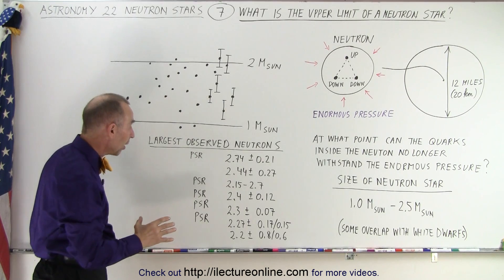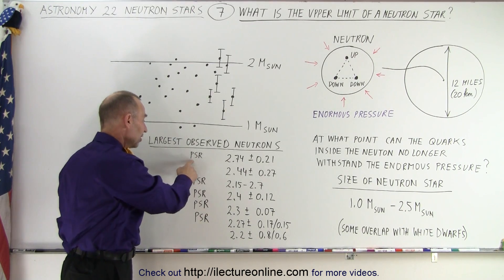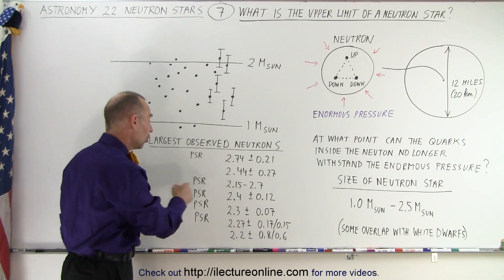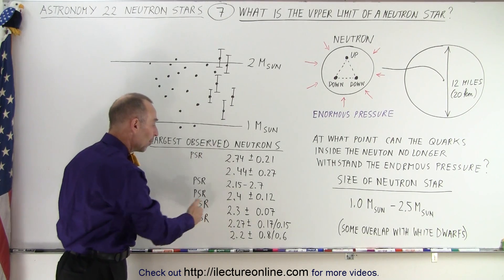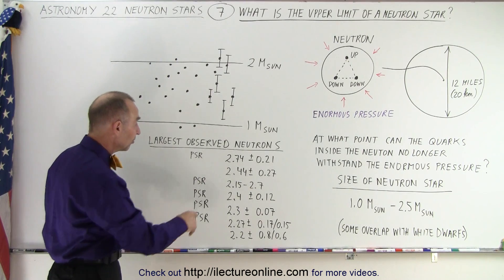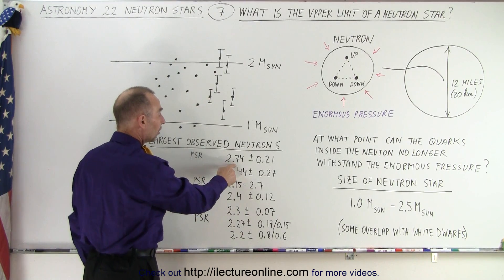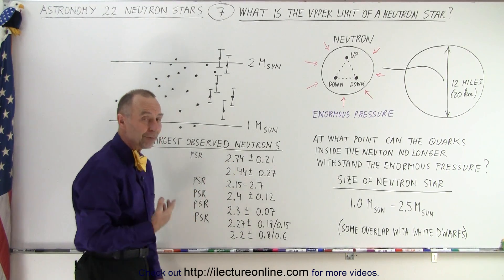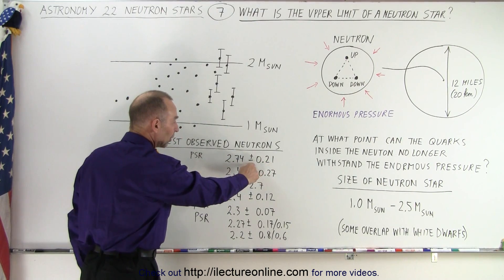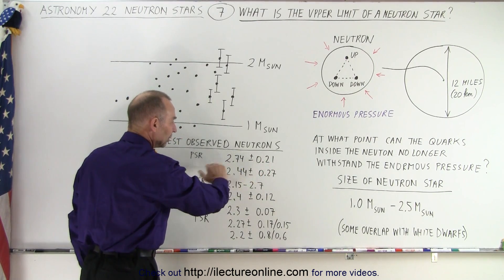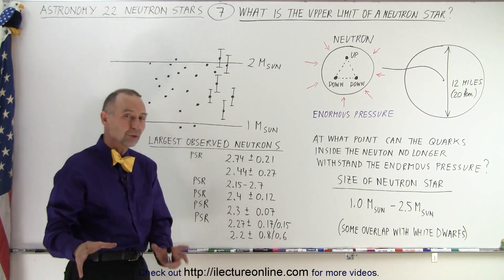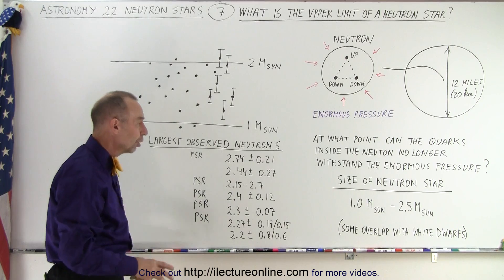Some of them are bigger than that. PSR designates a pulsed source of radio emissions — pulsars. Many of the large ones we observe are pulsars. The largest are even greater than 2.5 times the mass of the sun, but there's some uncertainty. Taking the lower limit of the uncertainty, most are 2.5 solar masses or lower.